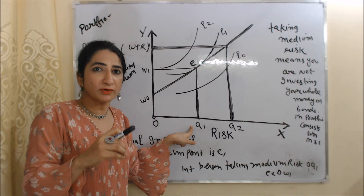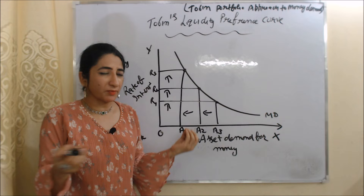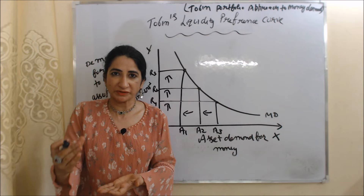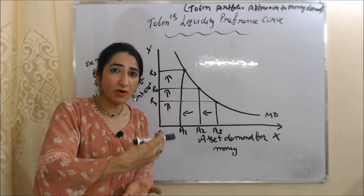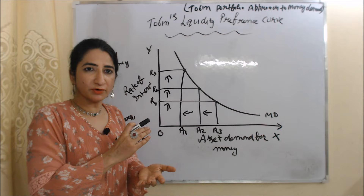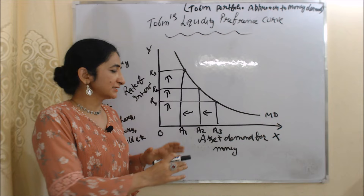Lastly, we are going to talk about Tobin's liquidity preference curve. As discussed, a rational individual keeps both money and bonds in their portfolio. But how much asset demand for money a person will create — how much money they demand to buy assets like bonds, debentures, shares, or gold — depends on the interest rate. If the interest rate is high, asset demand for money will fall. If the interest rate falls, asset demand for money will rise. So asset demand for money and interest rate have an inverse relation.